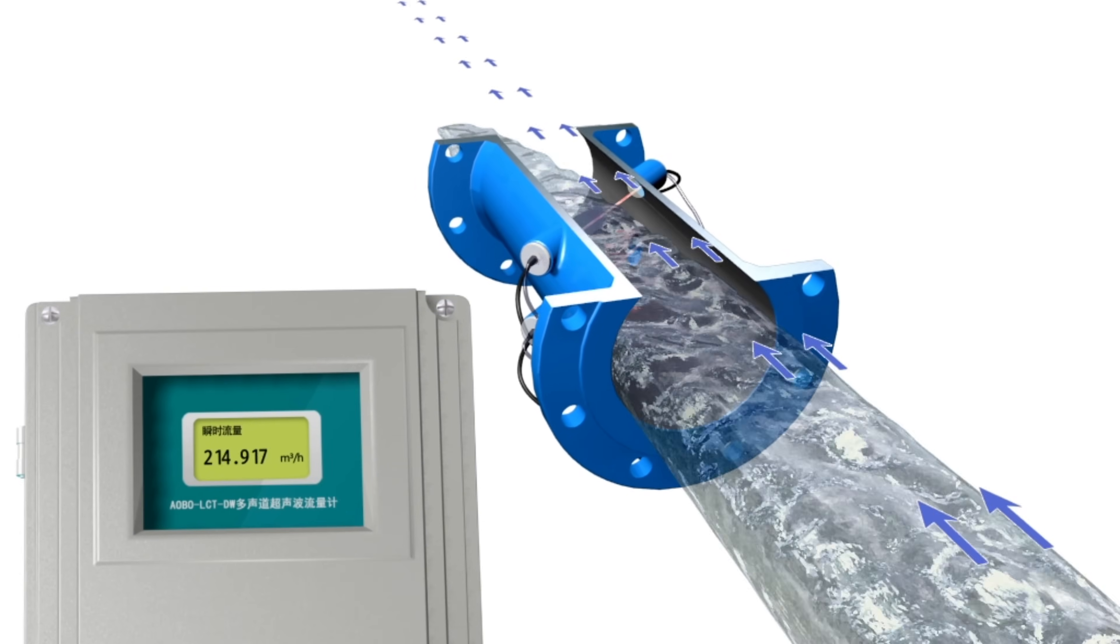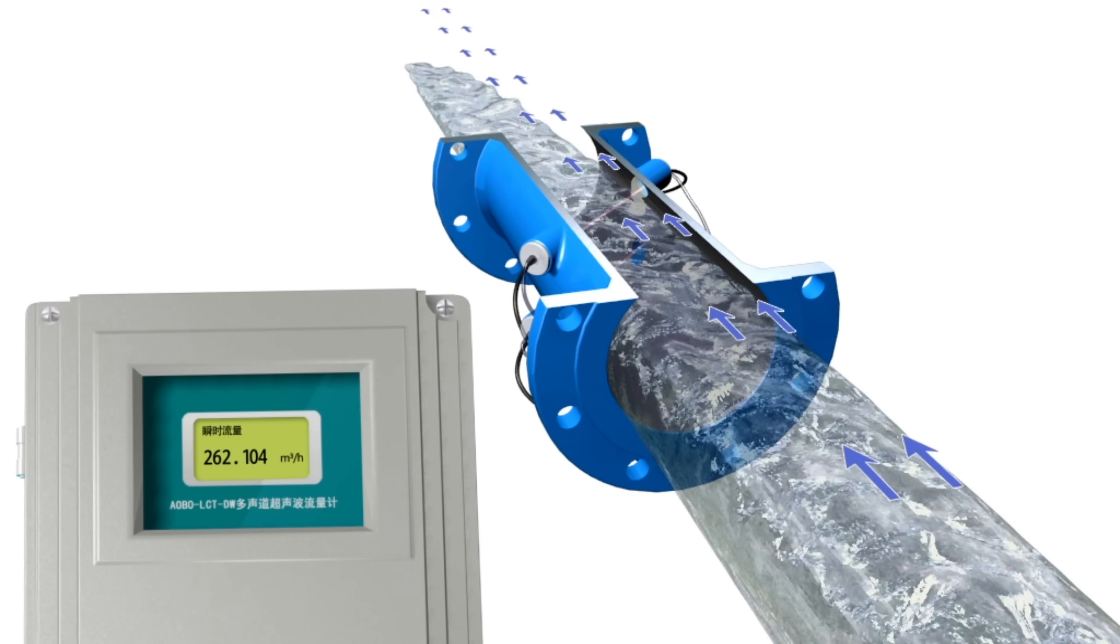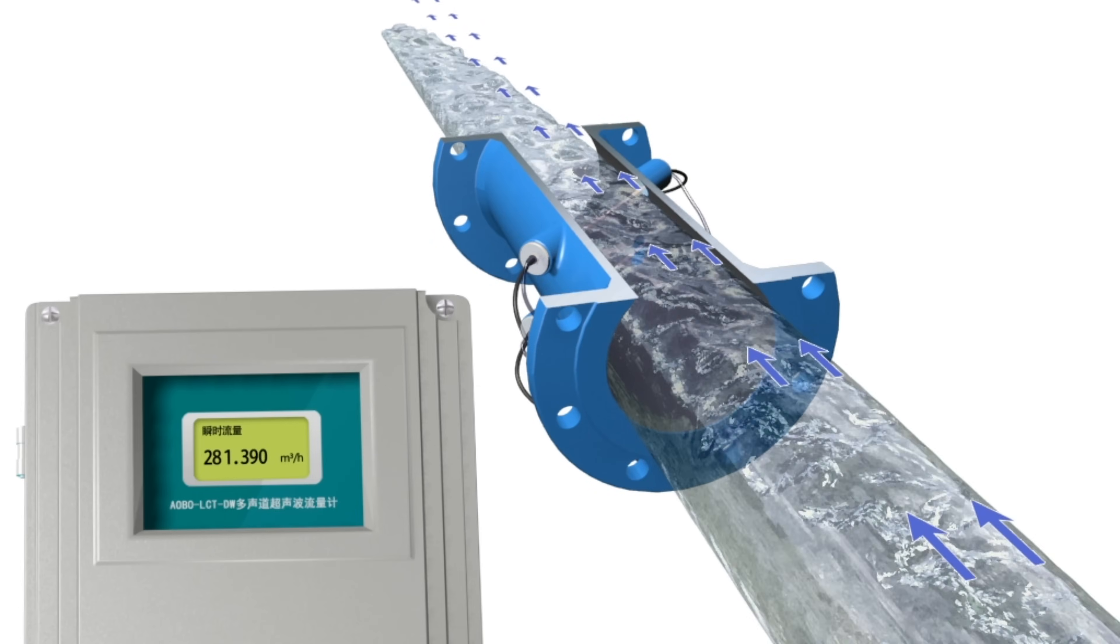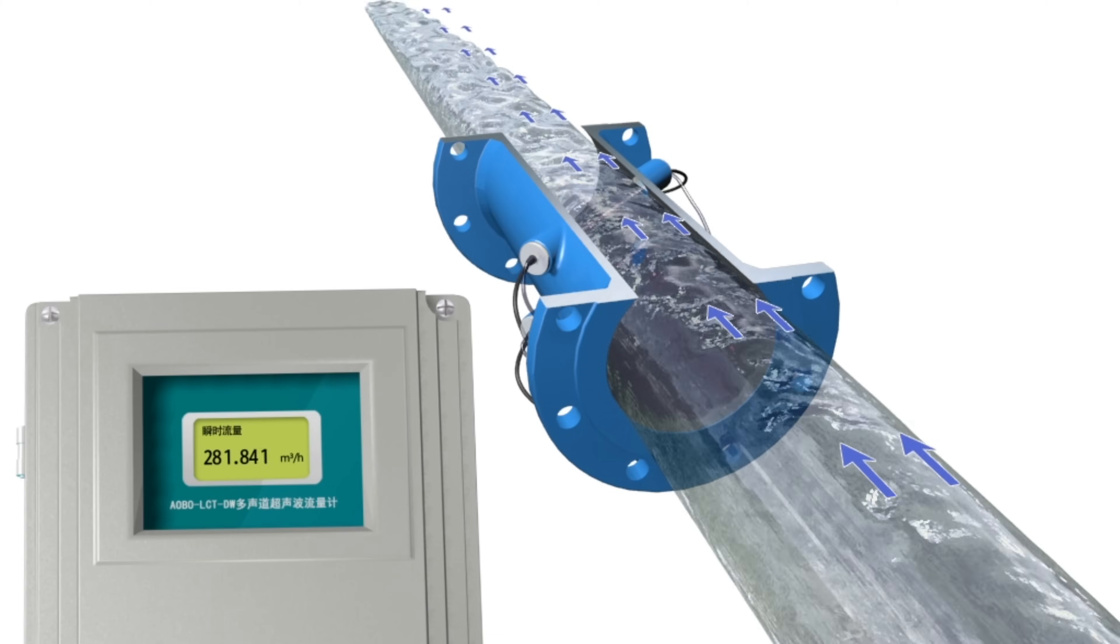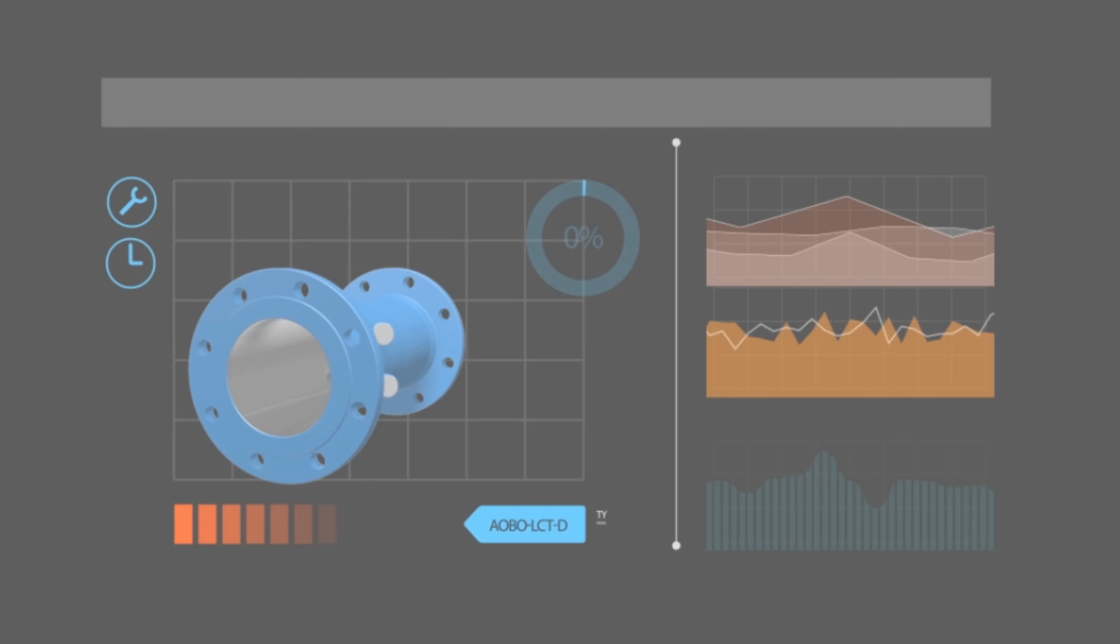Linearity is less than 0.5%, repeatability is less than 0.1% within the flow rate range of 0.015 to 5 meters per second.